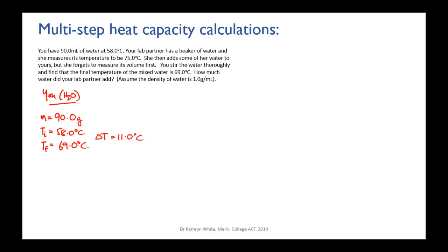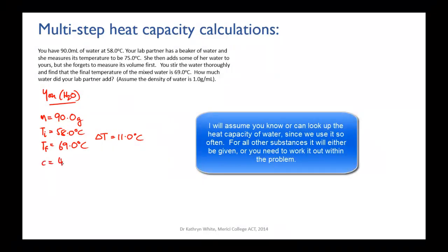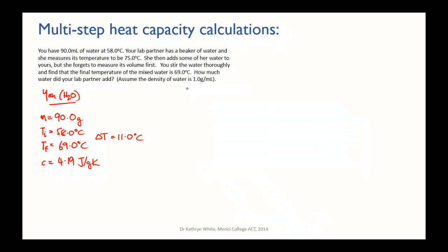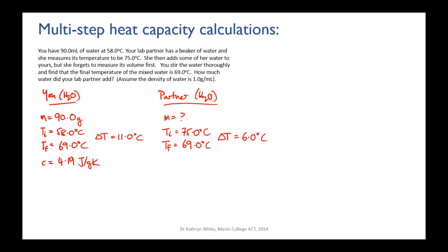Don't forget the point zero — it's an important significant figure. The heat capacity of water is 4.19 joules per gram Kelvin. For your partner's water: initial temperature 75.0 degrees Celsius, final temperature 69.0 degrees Celsius, so delta T equals 75 minus 69 equals 6 degrees Celsius. Since it's also water, her heat capacity is also 4.19 joules per gram Kelvin.